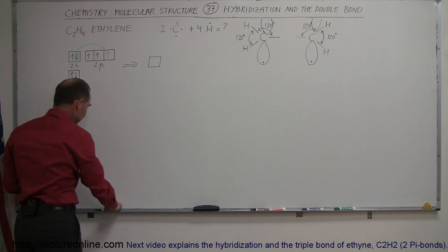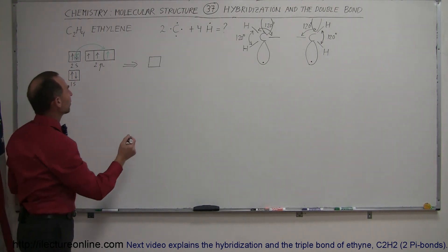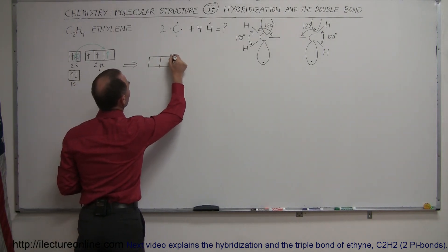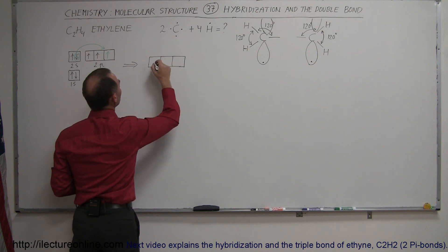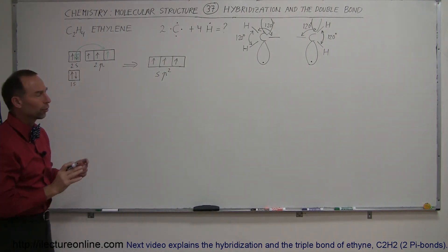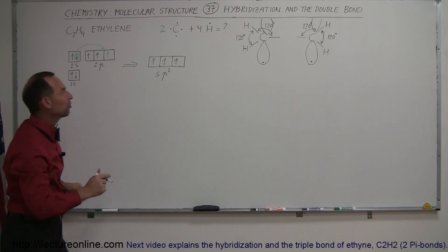And instead of making a sp3 hybridized orbital system, it actually makes an sp2 hybridized orbital system like this. So we have three identical orbitals. There would then be an sp2 hybridization. So three identical orbitals, all at 120 degrees apart from one another in a planar arrangement.